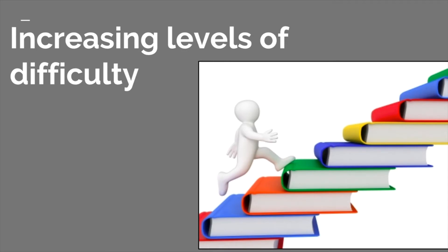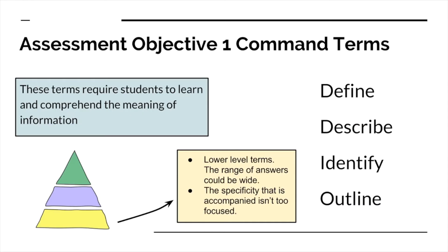There are increasing levels of difficulty in terms of what is required of the command terms. There are lower-level command terms — if it was a pyramid, they would be at the bottom. These terms require you to comprehend a magnitude of information and use it to a smaller degree. The range of answers can be wider and specificity isn't too focused. The words typically are define, describe, identify, and outline. These are the base command terms; you'll see these more with Paper 1, Question 1. They are simple recall information.